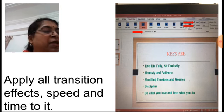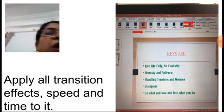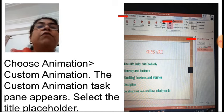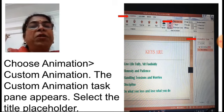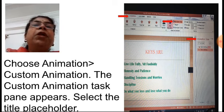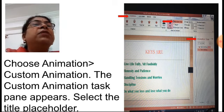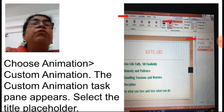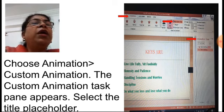Now we have to apply animation. Choose Animation and open Custom Animation — the Custom Animation task pane appears. In PowerPoint 2007, click on the Animation tab and select Custom Animation, and the task pane appears on the right side. In higher versions of PowerPoint, there is an Animation Task Pane option in the Animation tab — click on that and it will appear on the right side. Select the title placeholder for animation.